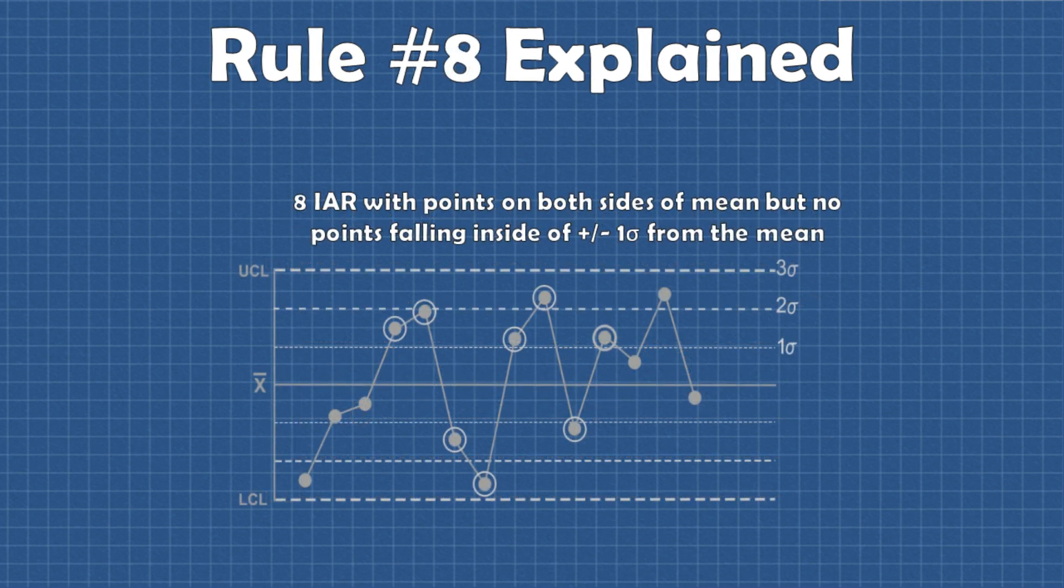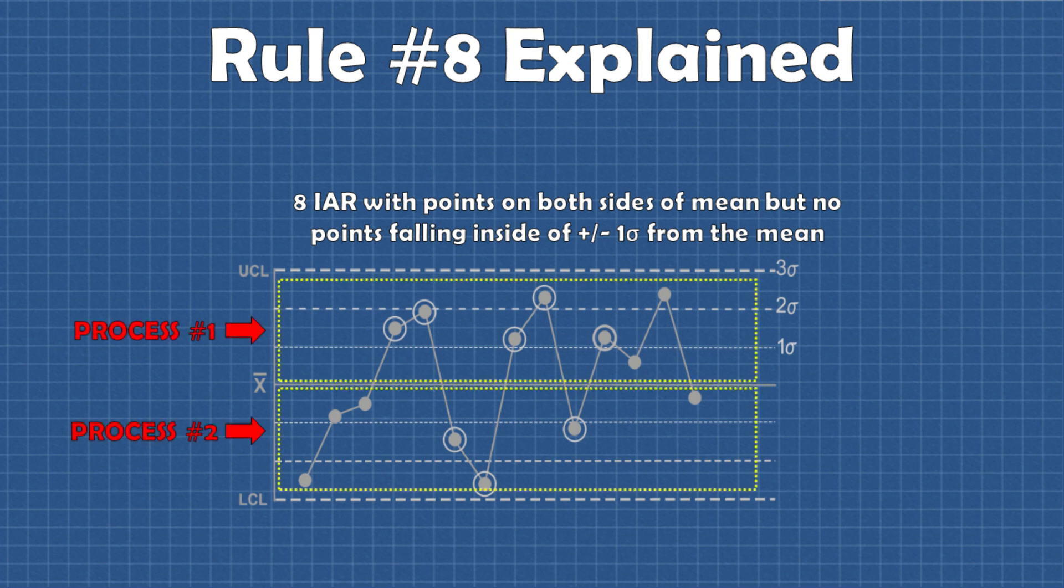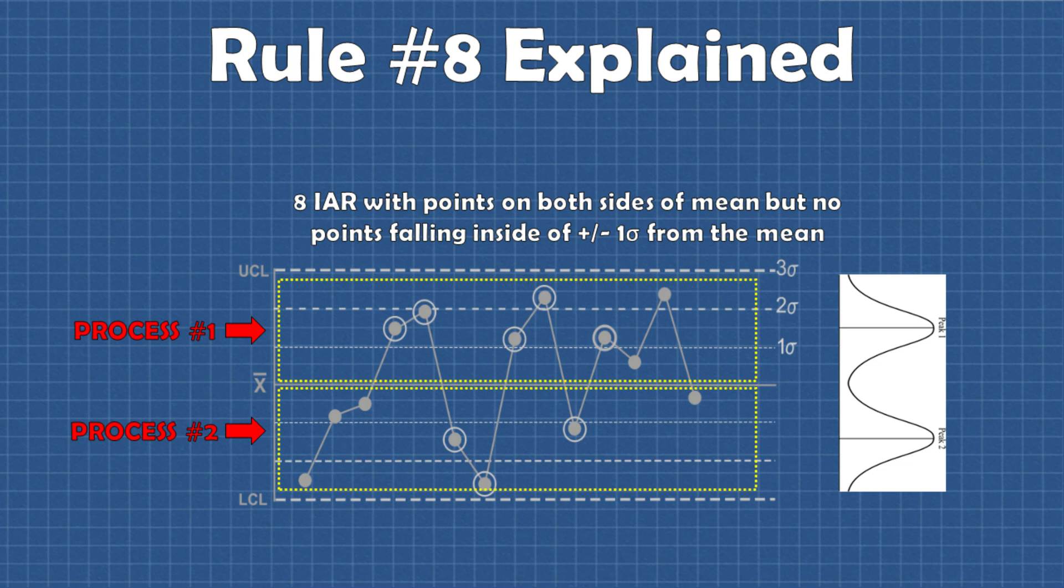If that is determined to be the case you should recalculate the control limits to monitor process going forward. Okay finally rule number eight is another rule for detecting mixture patterns. Just like rule number four and seven we often see this pattern when we are sampling from two different underlying sub-processes.